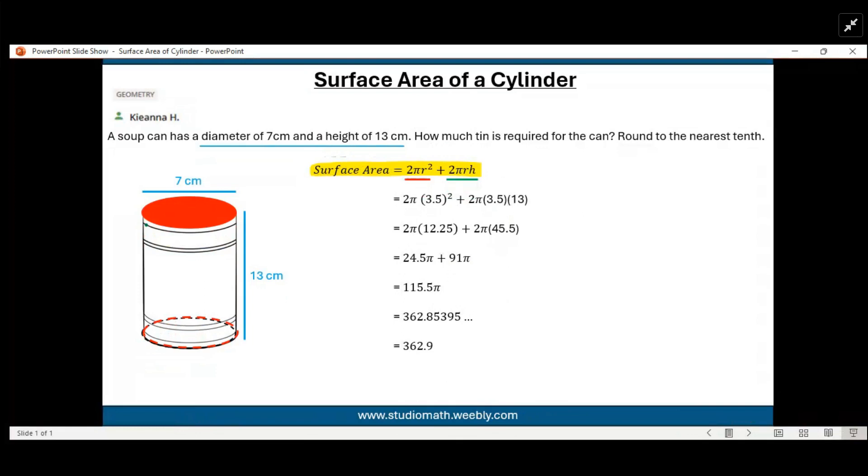Next we have 2πrh. Circumference of a circle is 2πr and h is the height of the can. So how do we put this together?